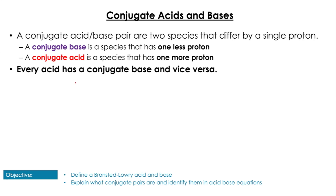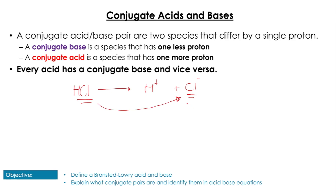Using Bronsted-Lowry theory, we can look at conjugate acid-base pairs. A conjugate base is a species that has one less proton than its parent species, and a conjugate acid has one more proton. For example, with HCl, we take away one proton to get Cl⁻ plus H⁺. So Cl⁻ is the conjugate base of HCl.